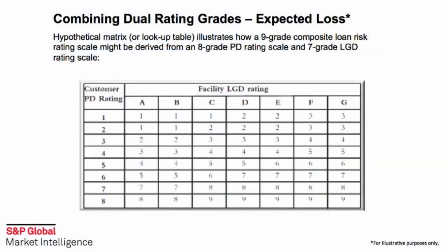In summary, the increasingly popular dual risk rating systems require a risk rating on the creditworthiness of the borrower on the one hand, and a risk rating based on the facility of the loan on the other hand. The two risk ratings are then combined using a matrix such as the one shown here on this slide to develop an overall composite loan quality risk rating. That's all for today. I'm Rad Lukic and thank you for watching.